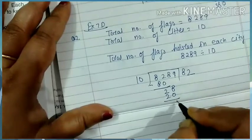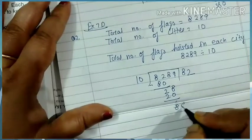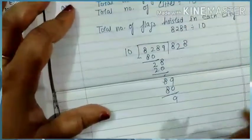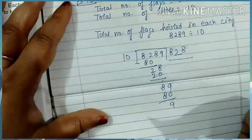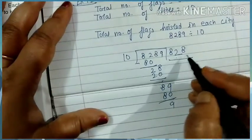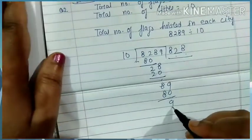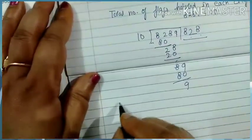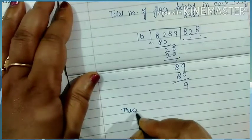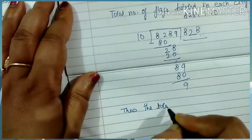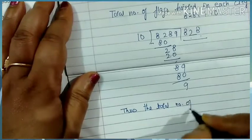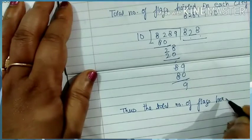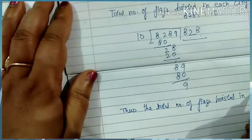89, then again 8, then 8, 9. So the answer will be, thus the total number of flags hosted in each city.